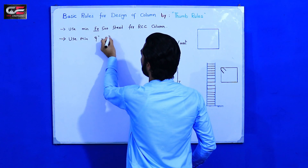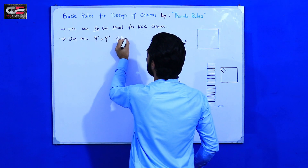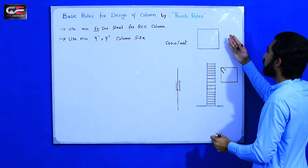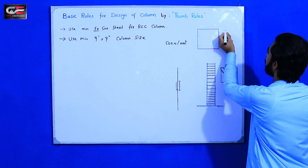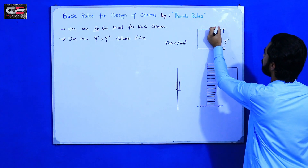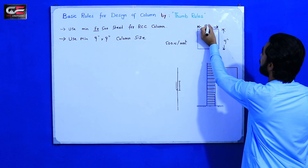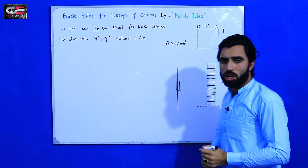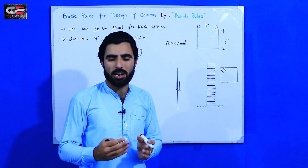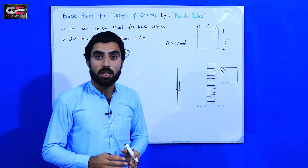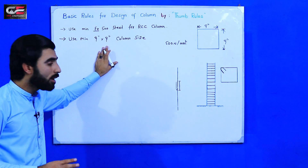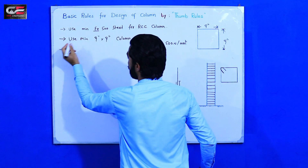The second point: use a minimum 9×9 inch column size. You can see this is the top of the column — the size should not be less than 9×9 inches. In most construction I have seen, they use 6×6 inch columns for block or other structures, but the column size should not be less than 9×9 inches.